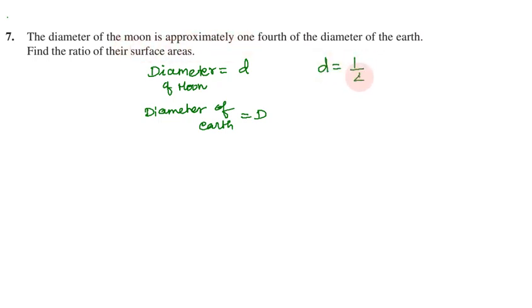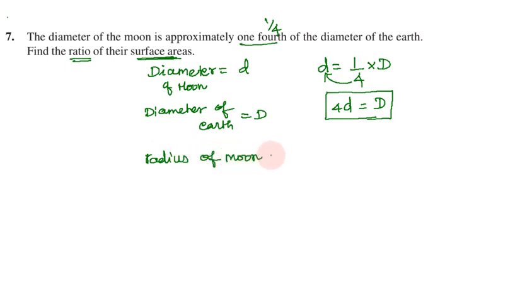One-fourth of the diameter of earth. So four d equals capital D. On the side, the moon capital D equal to four into small d. So next, radius of the moon is diameter divided by two, radius of earth.